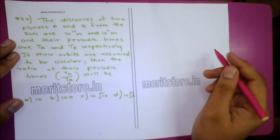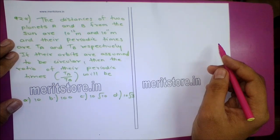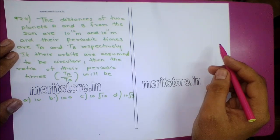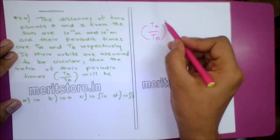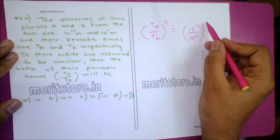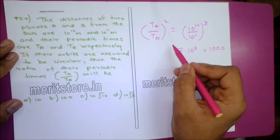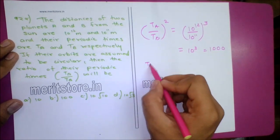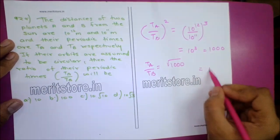Question 29: The distances of two planets A and B from the Sun are 10¹² m and 10¹¹ m, with periodic times TA and TB. Using Kepler's law: (TA/TB)² = (10¹²/10¹¹)³ = 10³ = 1000. So TA/TB = √1000 = 10√10. Option C, 10√10, is the correct answer.